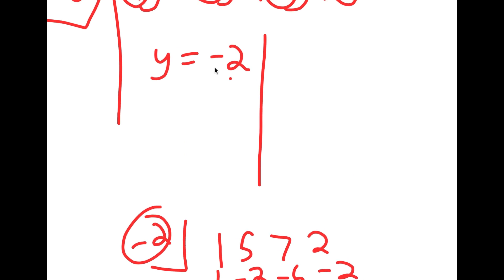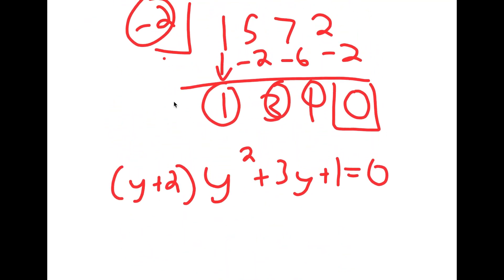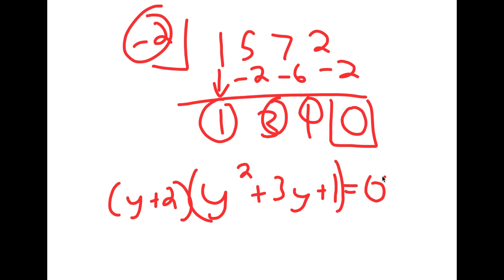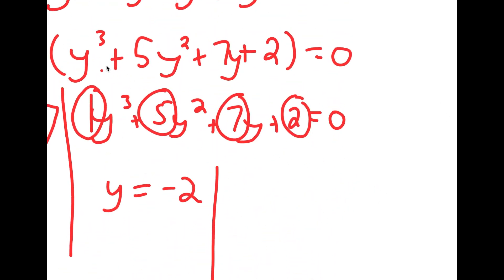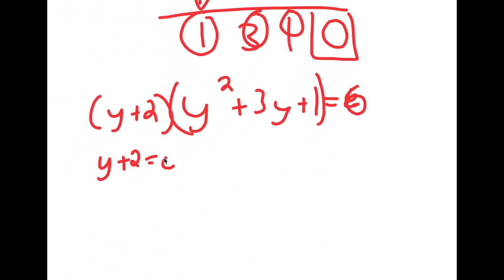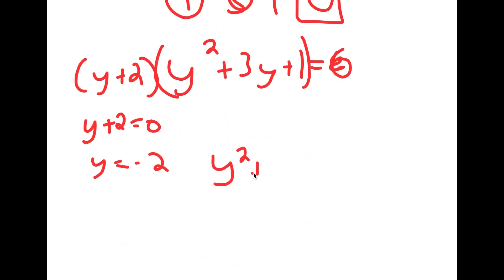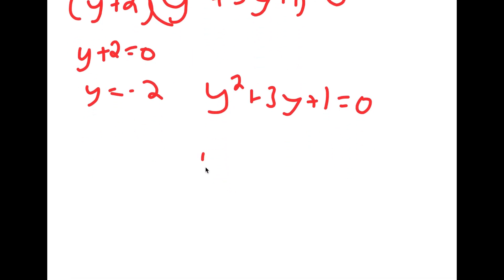Since negative 2 was a solution for y, we have y plus 2 times y squared plus 3y plus 1 equals y cubed plus 5y squared plus 7y plus 2. We already know y equals negative 2 from y plus 2 equals 0. Now all that's left is y squared plus 3y plus 1 equals 0, which requires the quadratic formula. Using it, y equals negative 3 over 2 plus or minus the square root of 5 over 2.